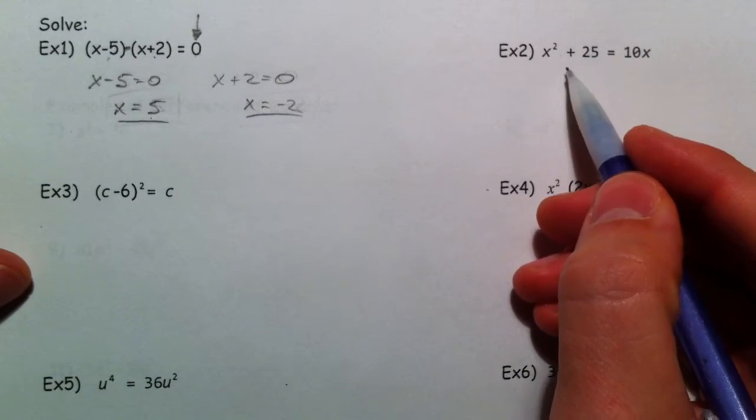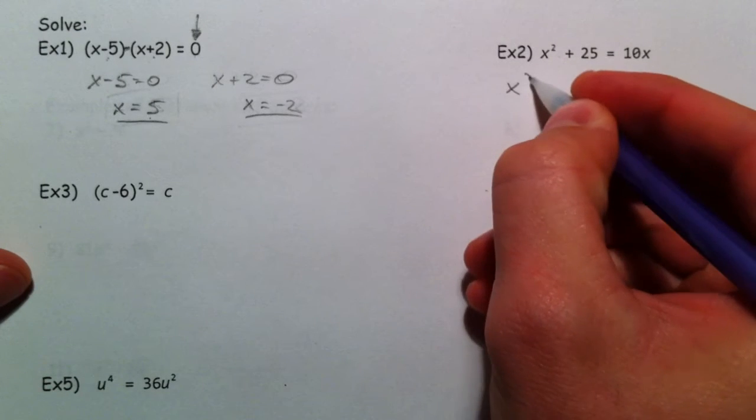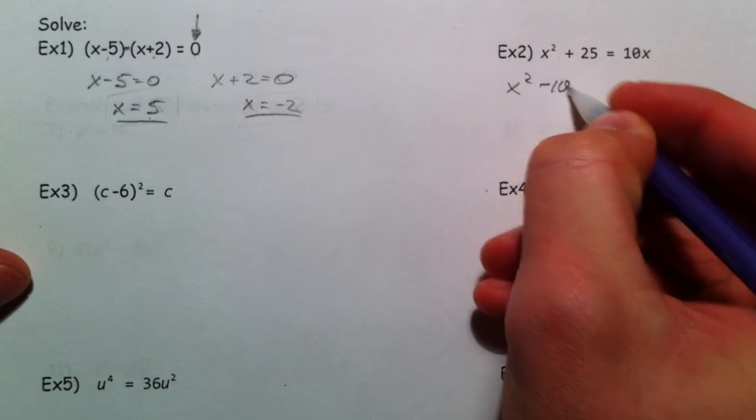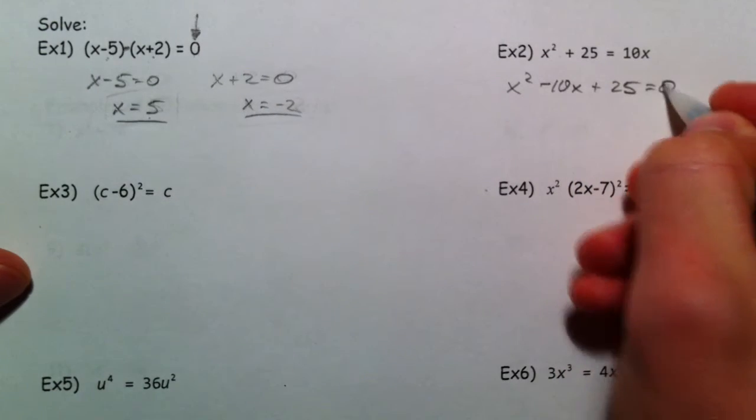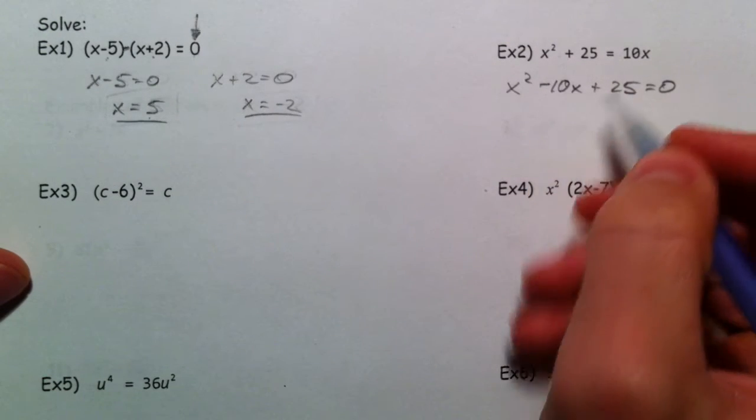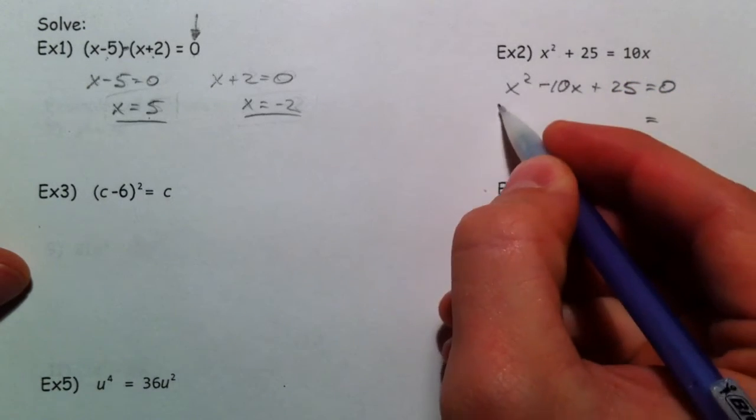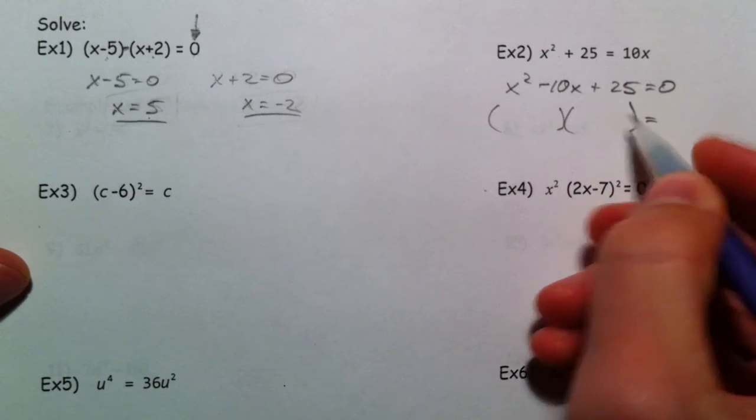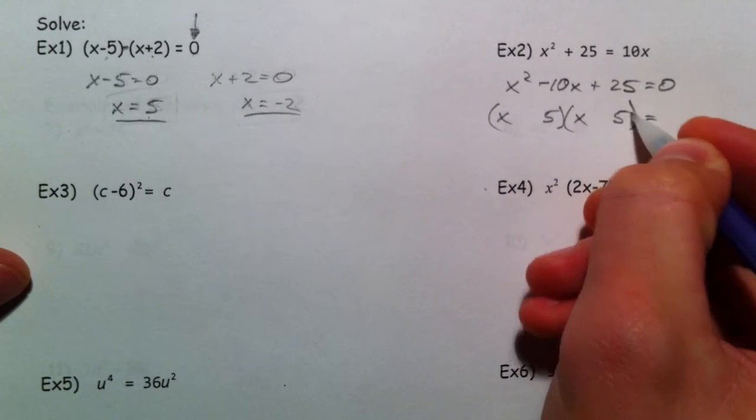So on this one, before we factor we have to set it equal to zero, because it only works set equal to zero. So I subtracted negative 10x, set it equal to zero, it multiplies to 25 and adds to 10. So 5 and 5, and it's got to be minus.